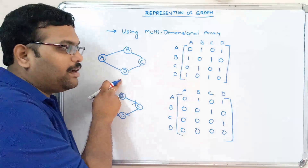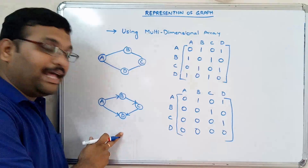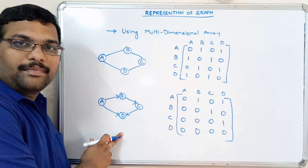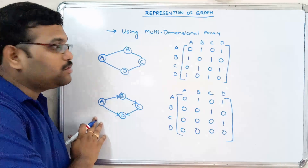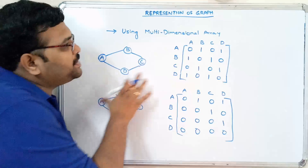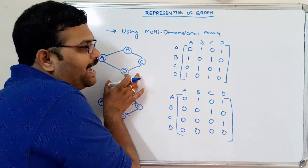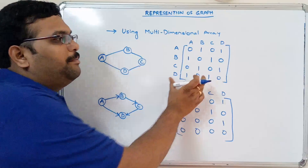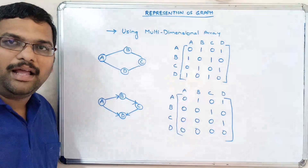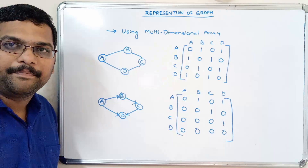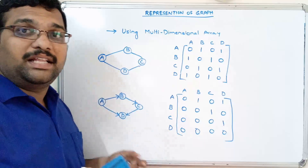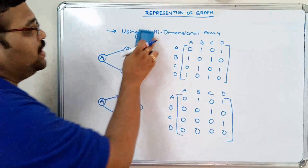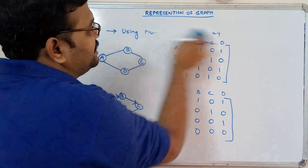So this is the matrix represented for the directed graph — the first one is an undirected graph and this one is a directed graph. So I hope you understood how to represent a graph using a multidimensional array. Now we'll see another type of representation by using a list.